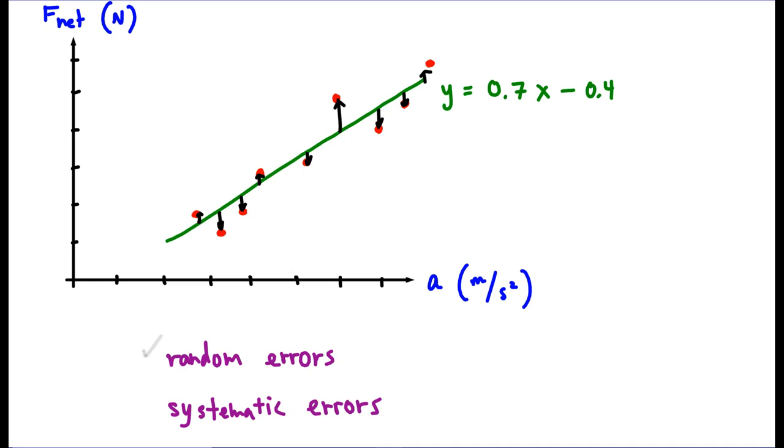What about systematic errors? If we take away those errors and think about net force and acceleration, we remember Newton's second law. Net force should be directly proportional to acceleration. So if we had perfect data, it would go through the origin, like this.